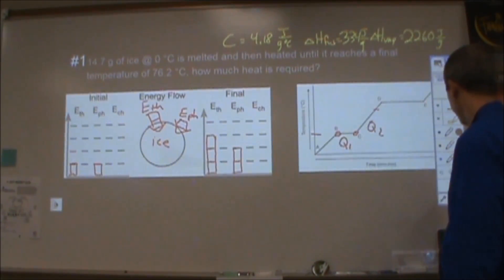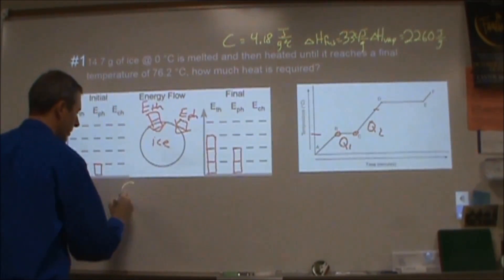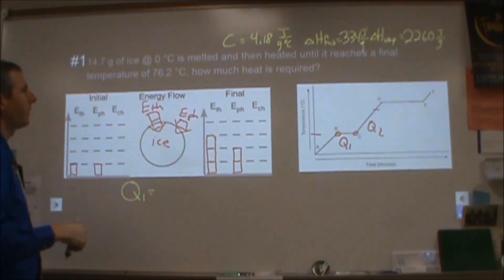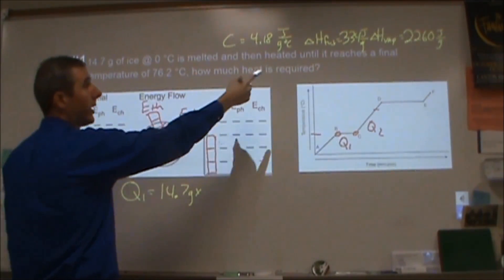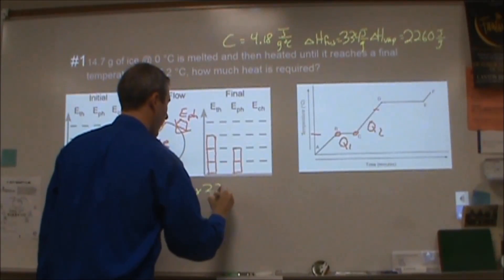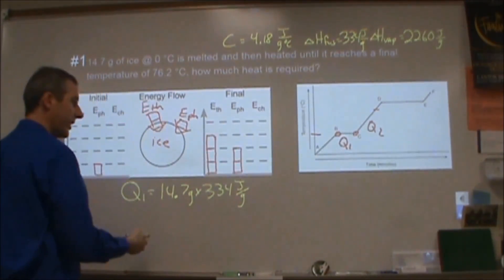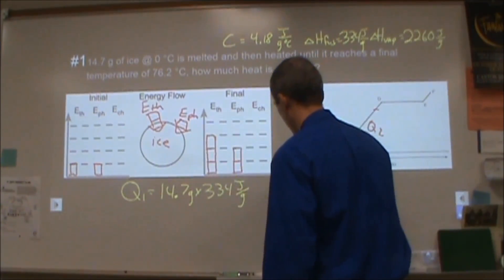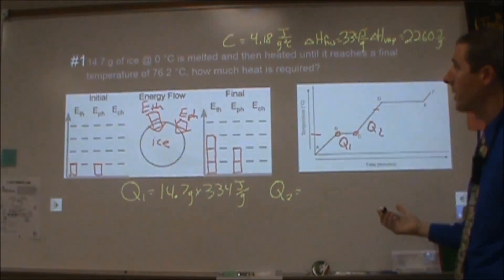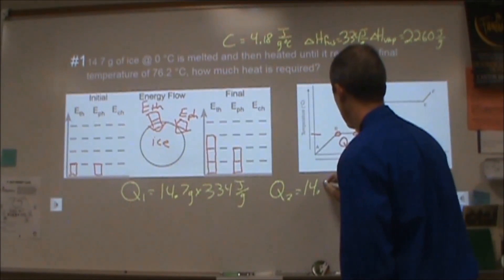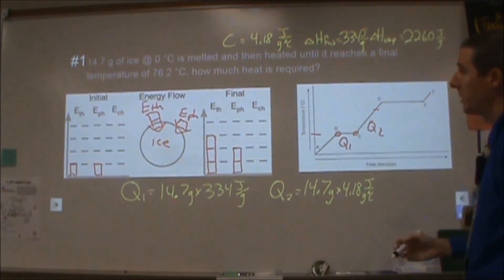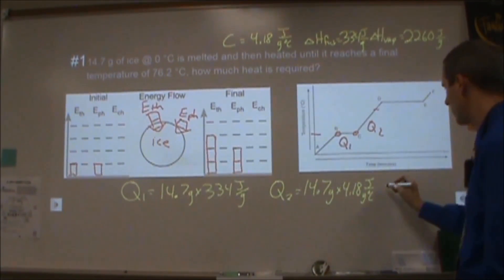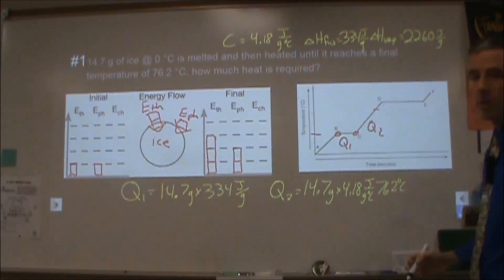For the calculations then, Q1 for the melting of the ice, for the phase energy change, I'm going to be doing 14.7 grams times the enthalpy of fusion 334 joules per gram. For the second amount of energy, Q2, I'm going to do a specific heat capacity problem, so I'm going to have 14.7 grams times 4.18 joules per gram per degree Celsius. And then my temperature change, I'm going from zero to 76.2. So I get two different Q values, and then the total is just going to be how much energy total is applied.